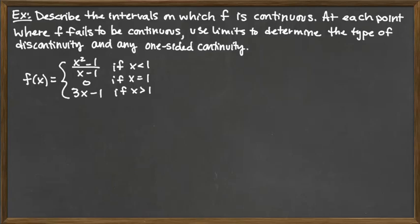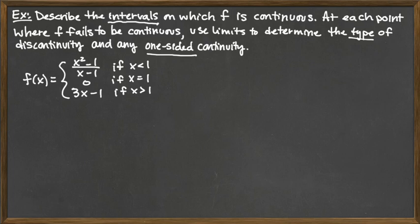We are going to be considering the continuity and types of discontinuity for this piecewise defined function. We're going to be looking for the intervals of continuity, and at each point where we don't have continuity — so for every discontinuity — we're going to use limit statements to determine the type of discontinuity as well as one-sided continuity. Whenever we're looking at a piecewise defined function, we need to consider both the pieces as well as any breaks in the domain.